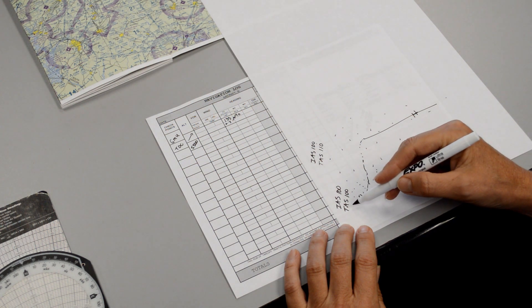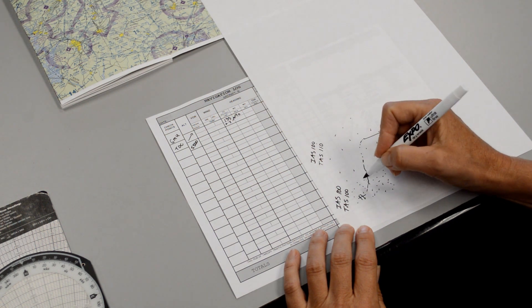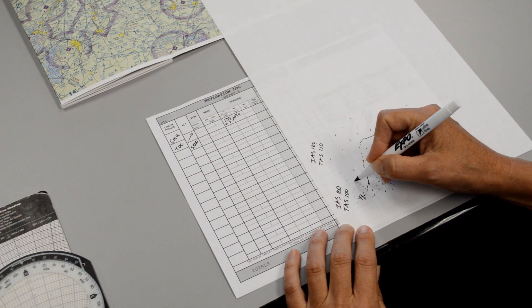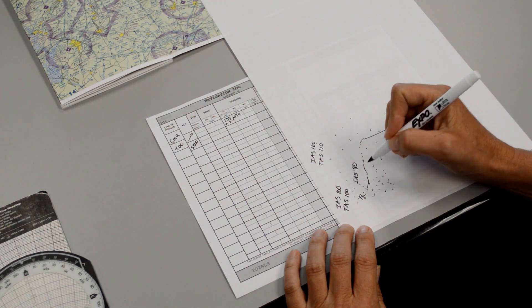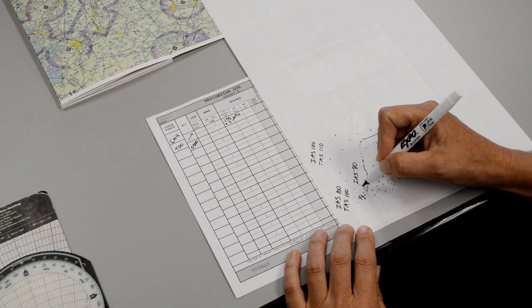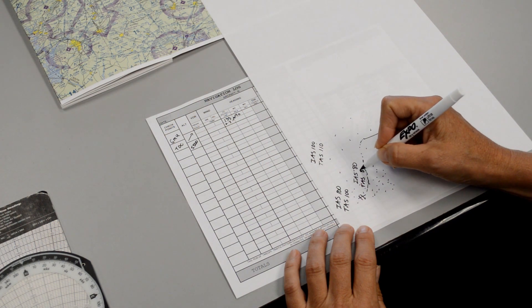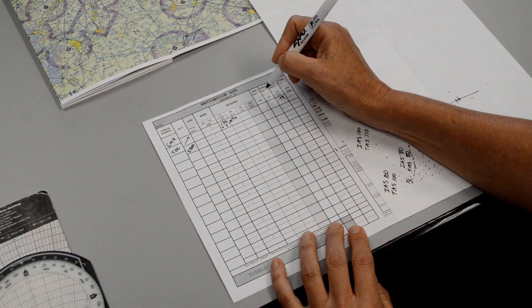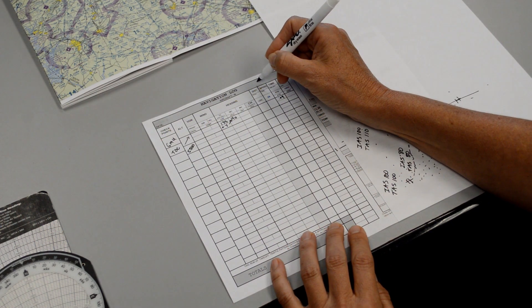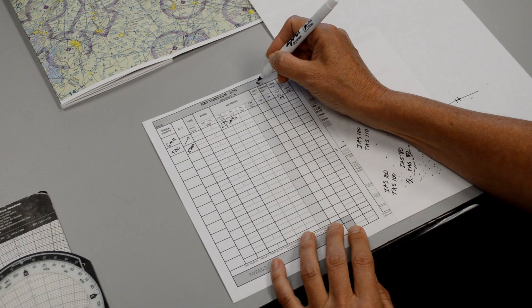For our true airspeed for the climb portion, if we're going to indicate about 80 knots on the climb, then we can simply call our true airspeed 80 knots. We'll write that up here where it says true airspeed. So for the climb, I'm just going to put 80.